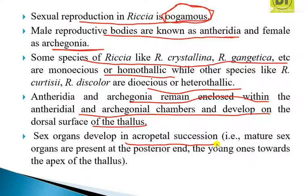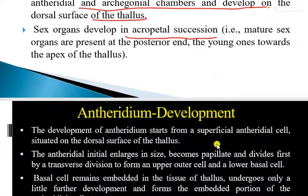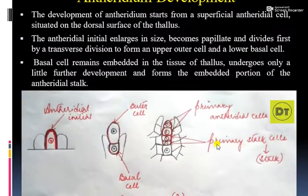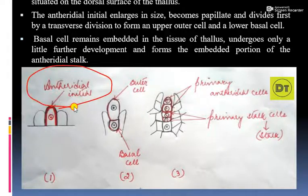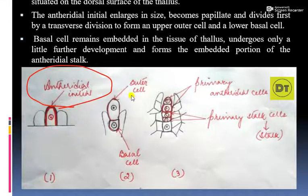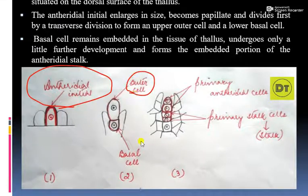This development is called acropetal succession. Antheridium development begins from a cell known as the antheridial initial. The antheridial initial undergoes transverse division, forming two cells: the upper cell is called the outer cell, and the lower cell is called the basal cell.